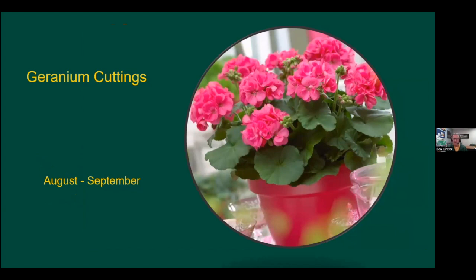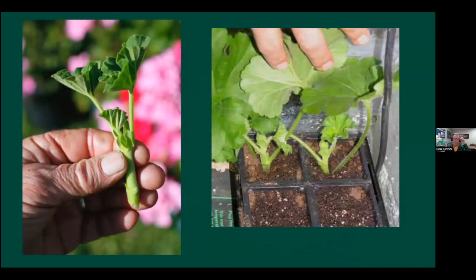Let's talk specifically about geranium cuttings. Geraniums are one of the most popular outdoor flowers in summer, and the time they root really well is late summer — August and September — when you have big potted geraniums outdoors. Take cuttings off those and start them, grow them indoors over winter, and they'll be ready for the following May.